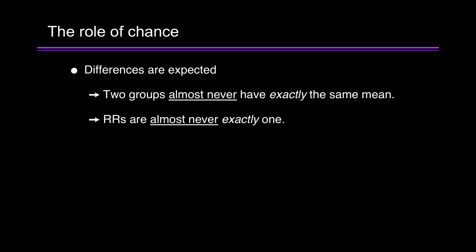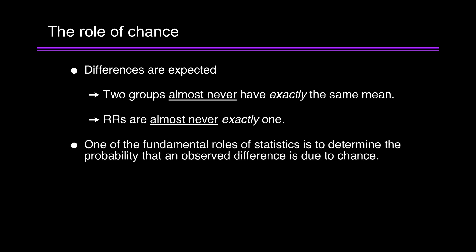Consider the role of chance. Differences are expected. Two groups almost never have exactly the same mean. Relative risks are almost never exactly one. One of the fundamental roles of statistics is to determine the probability that an observed difference is due to chance. That brings us to the p-value.